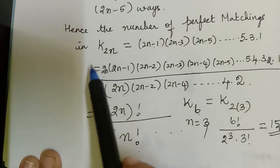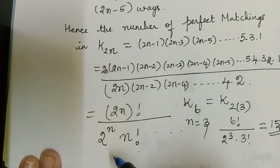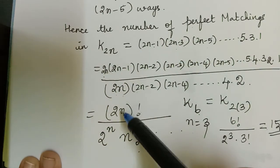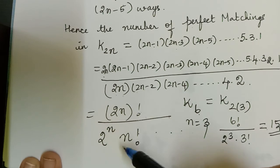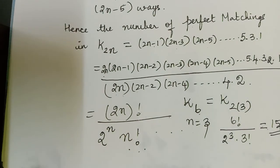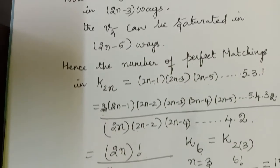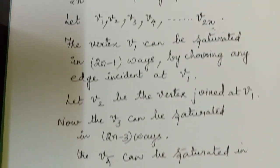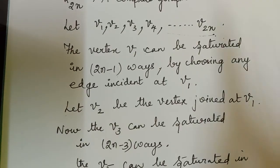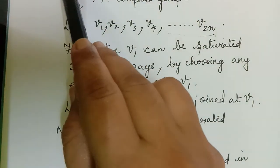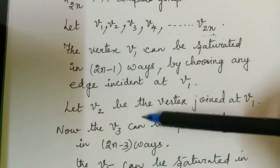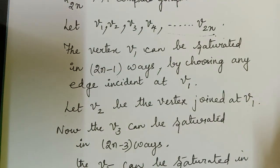Therefore, in K₂ₙ, the number of perfect matchings is (2n)! divided by 2ⁿ · n!. Hope you have understood the method of finding the number of perfect matchings of K₂ₙ. Thank you.